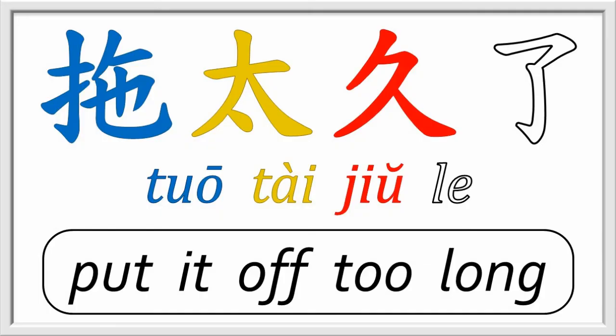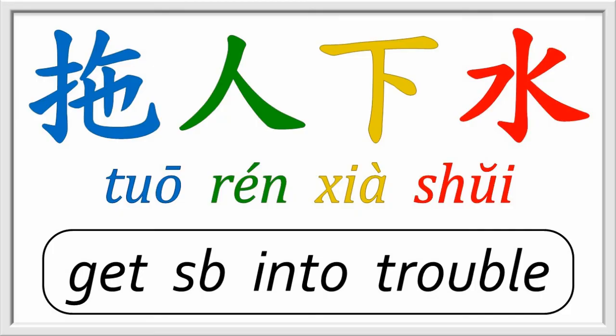This character tuō can refer to both physical and figurative dragging. For example: tuō tài jiǔ le — procrastinating, dragging something out, putting it off too long. To drag somebody underwater, tuō rén xià shuǐ, can be either physical or metaphorical. The figurative usage refers to a person already in trouble incriminating someone else, taking them down too.